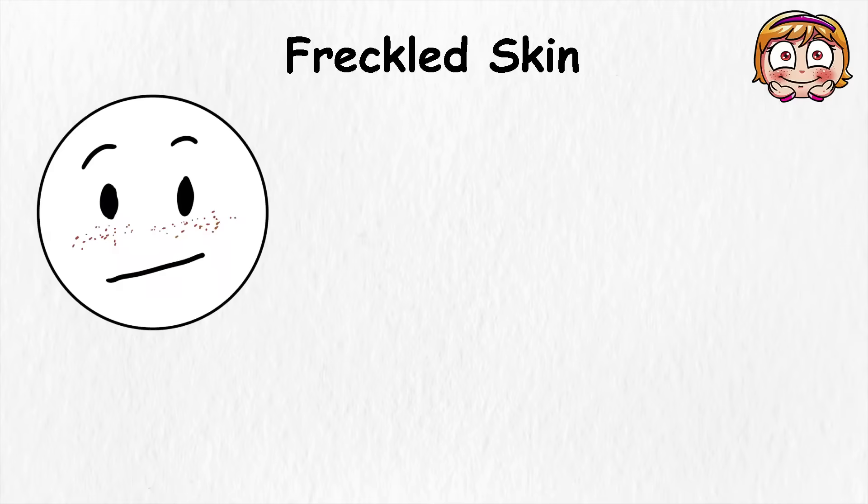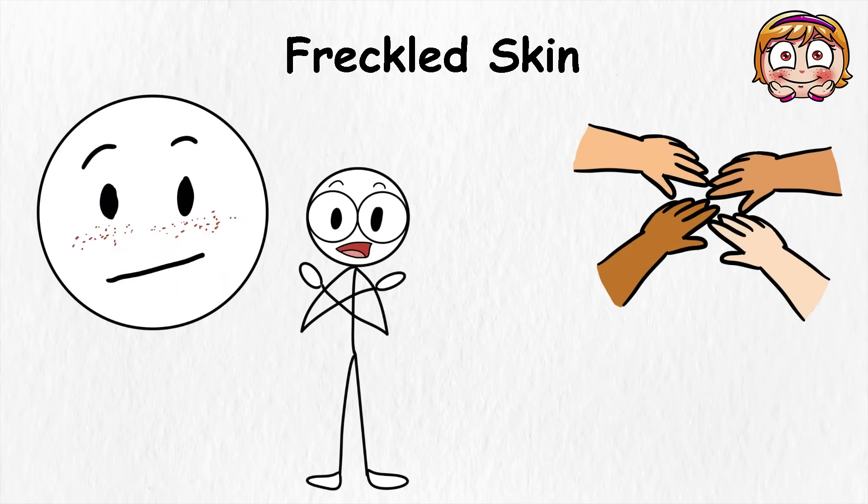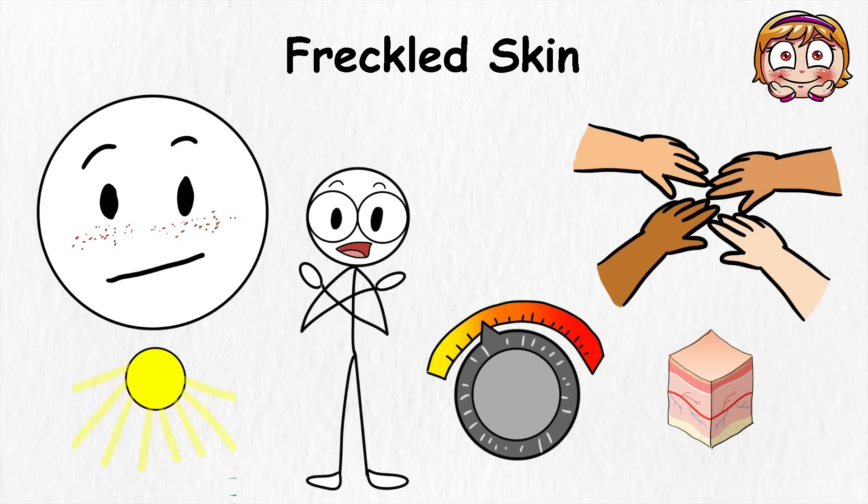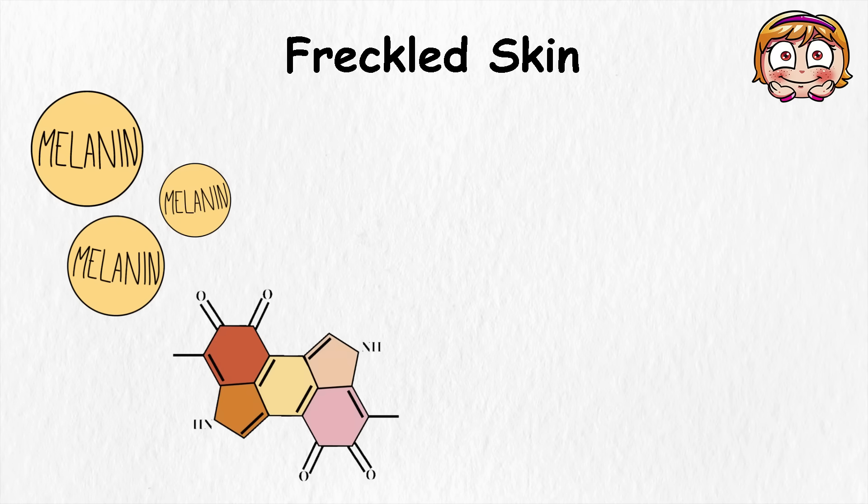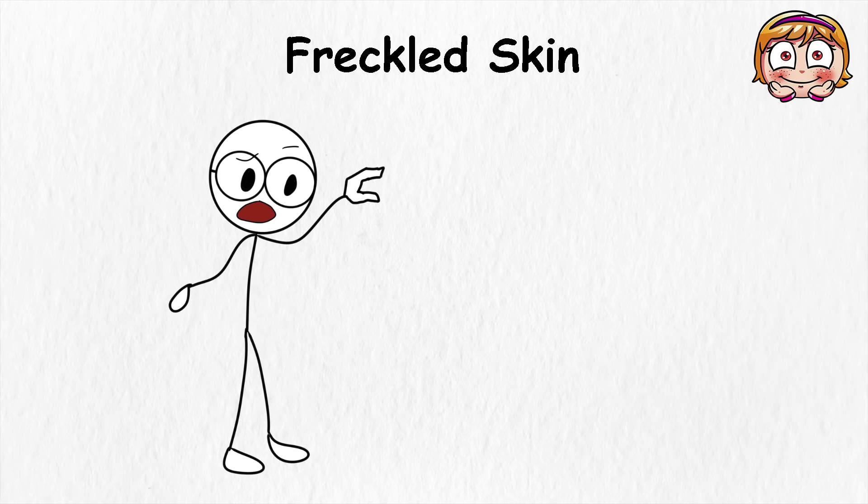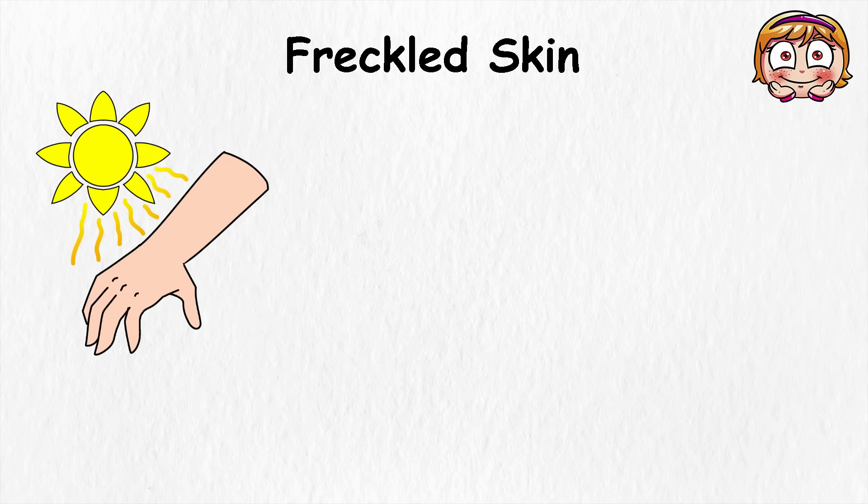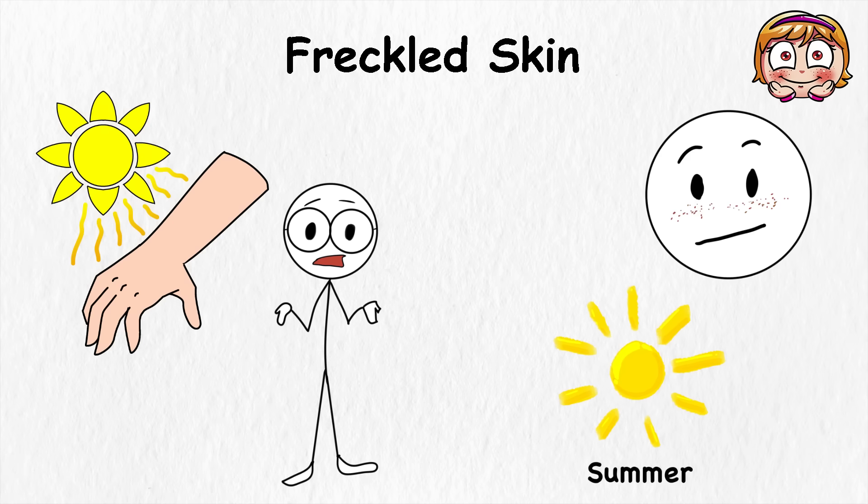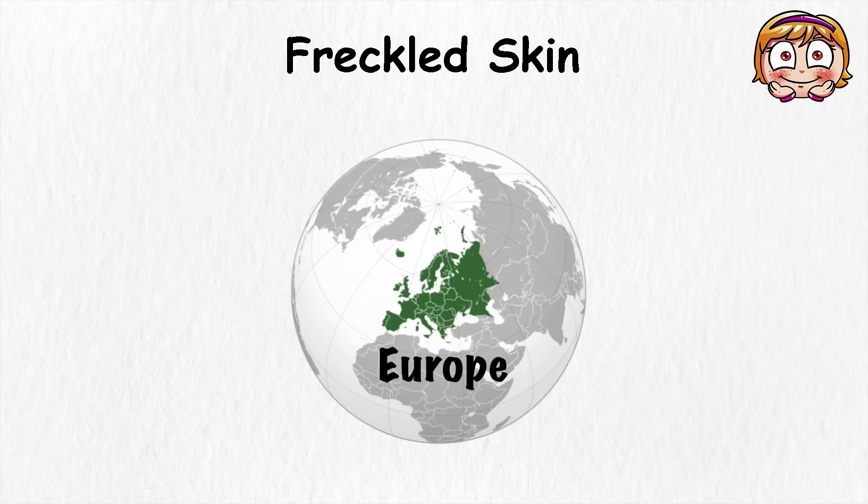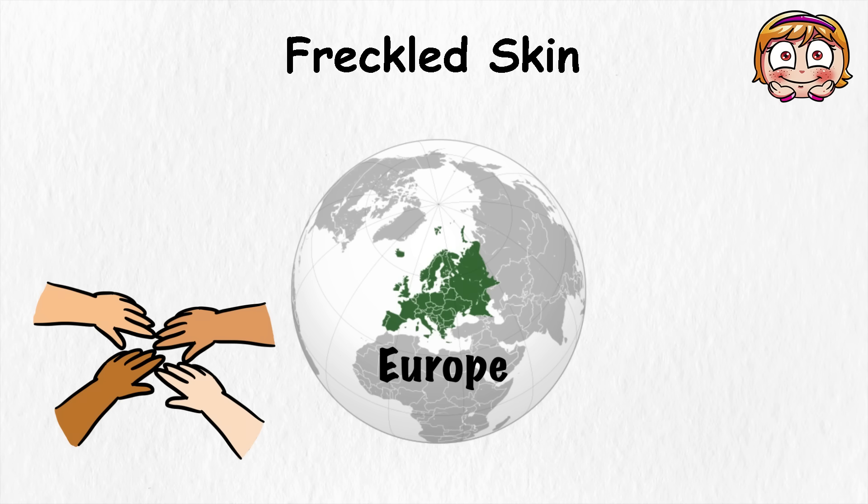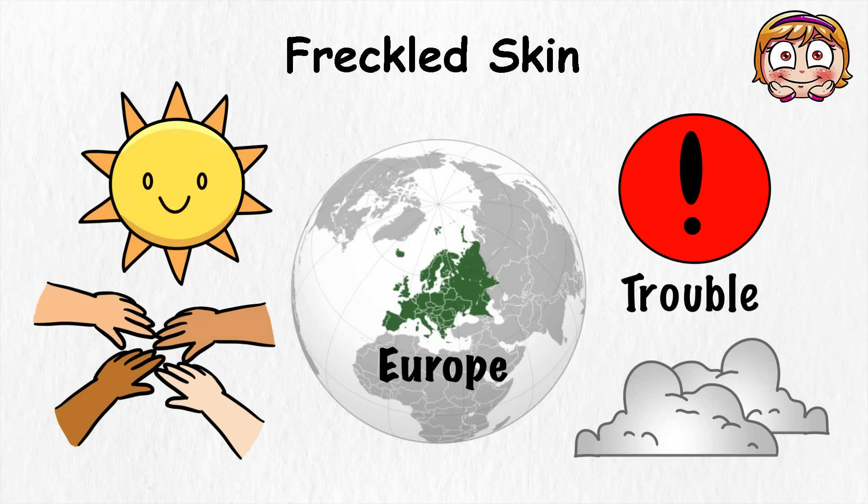Freckled skin. Freckles aren't their own skin color, but they change the way skin looks and reacts to sunlight. They appear when melanin, the pigment that gives skin its color, gathers in small clusters instead of spreading evenly. When the sun hits those spots, they darken faster than the rest of the skin, which is why freckles often show up more in summer. They're most common in people with lighter skin, especially those of northern European ancestry, but freckles can show up on any skin tone. In cloudy northern climates, freckles didn't cause much trouble because the sun wasn't as harsh.